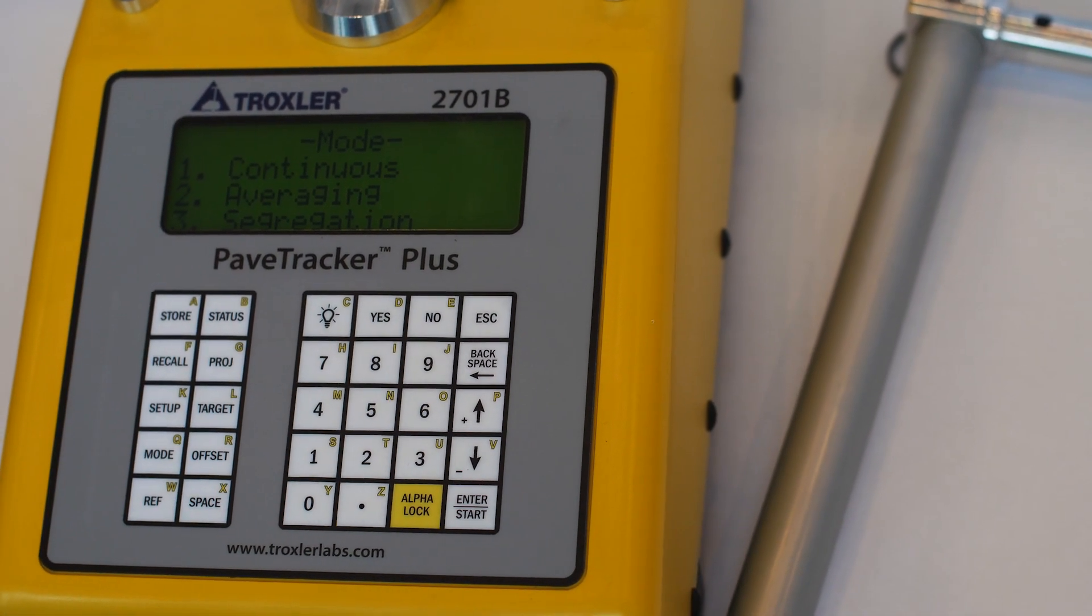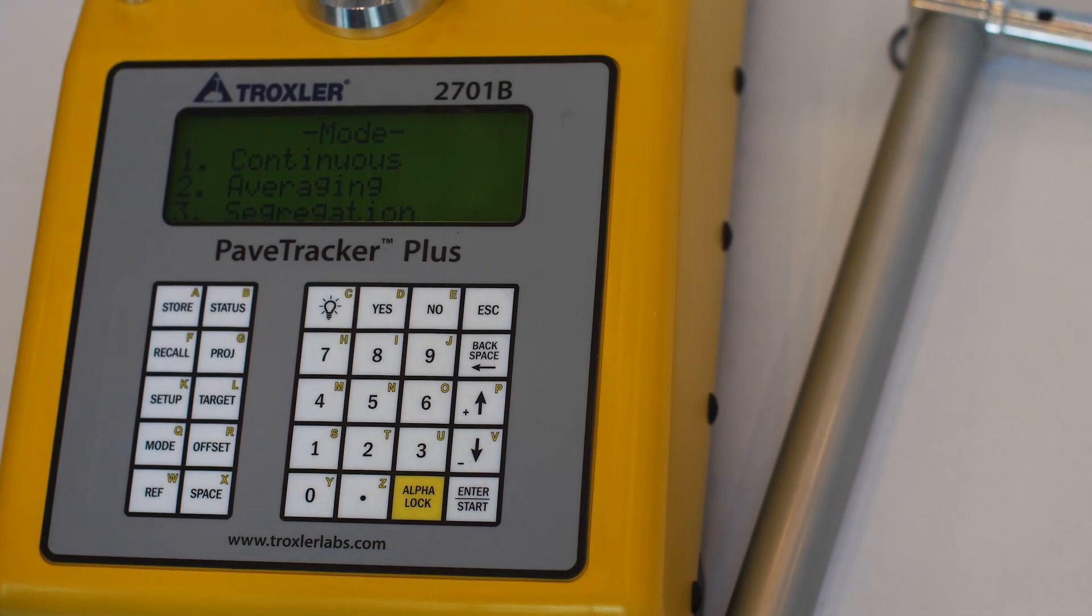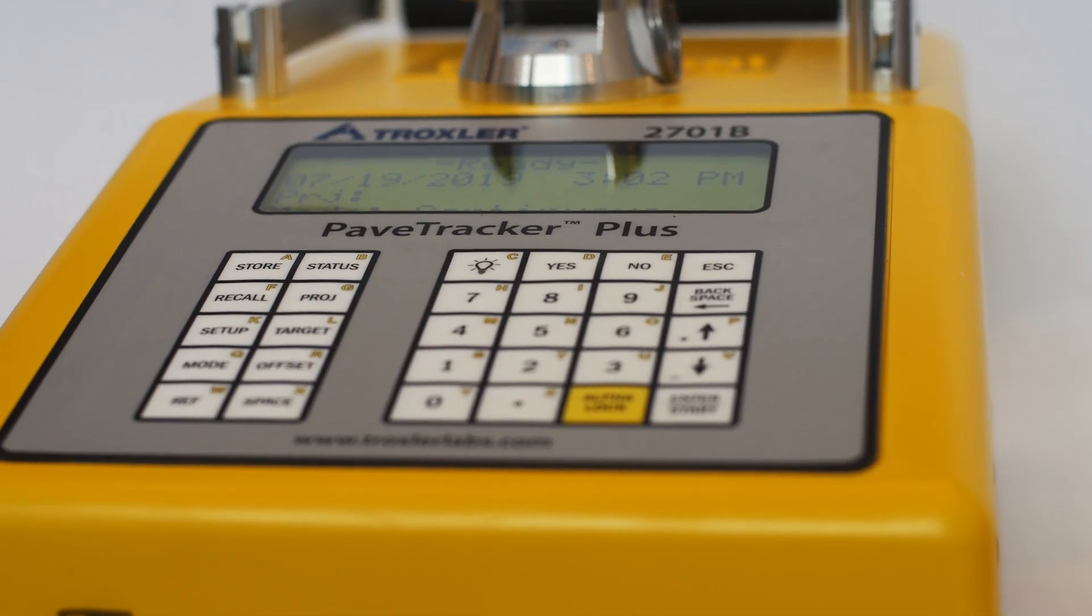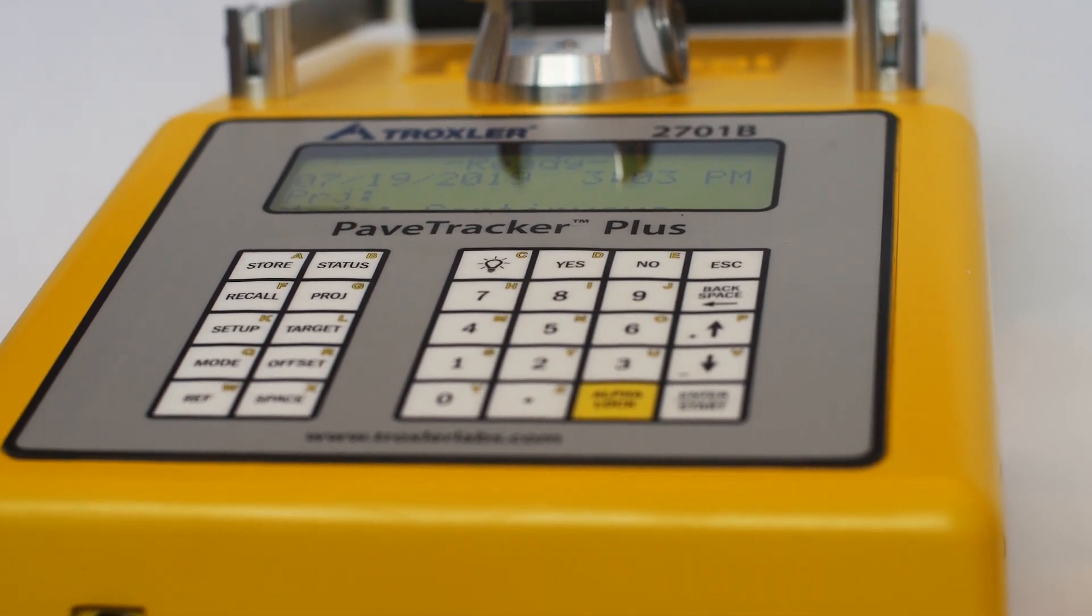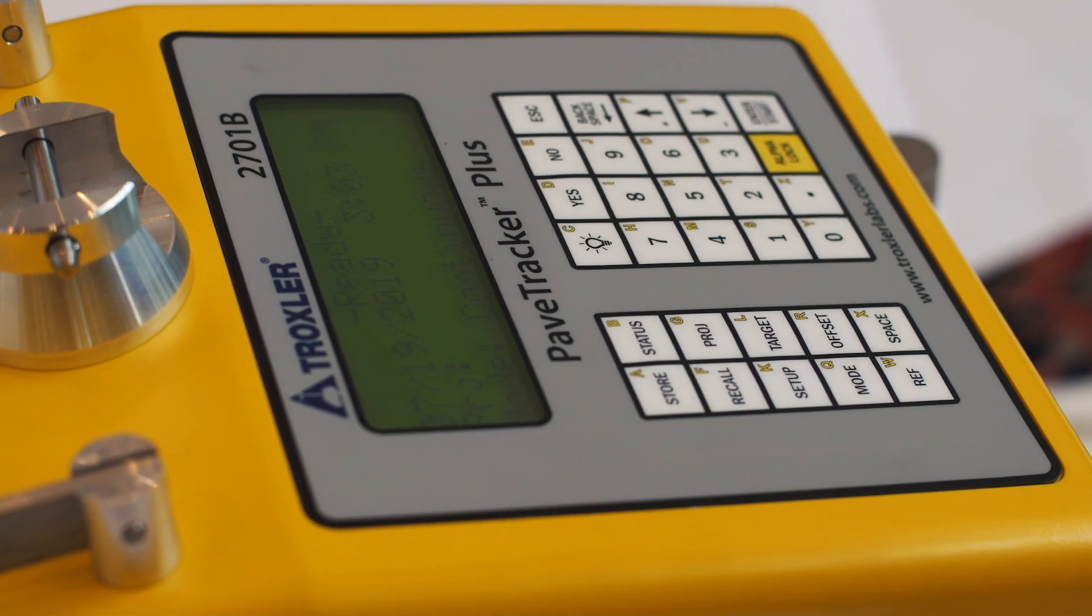The Pave Tracker Model 2701B Plus complies with the ASTM standard D7113 and AASHTO T343 and is an accepted QAQC device in the U.S.